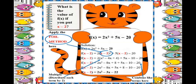Another example: what is the value of f of x if you put x minus 2? This time the substituted value is not just a number — it has a letter. We have f of x equals 2x squared plus 5x minus 20. Write the given first, then substitute x minus 2 in place of x.